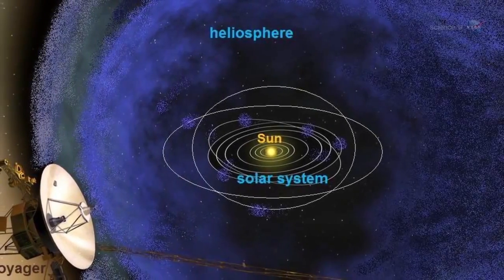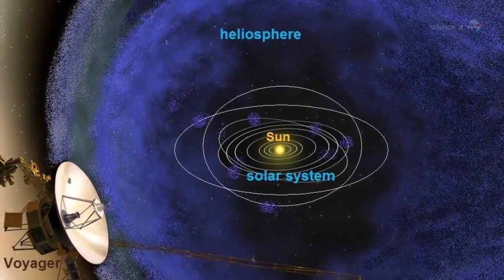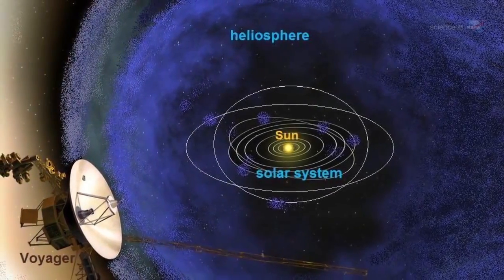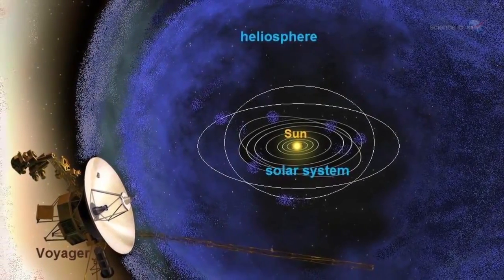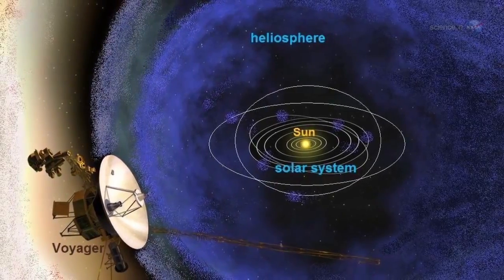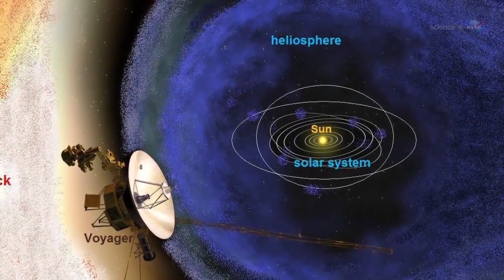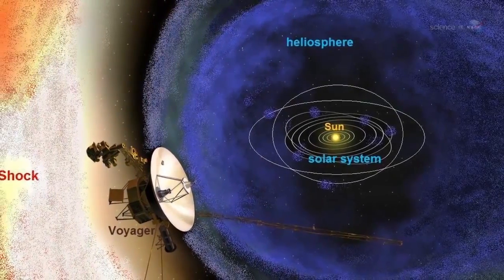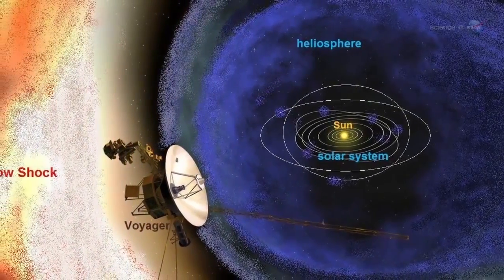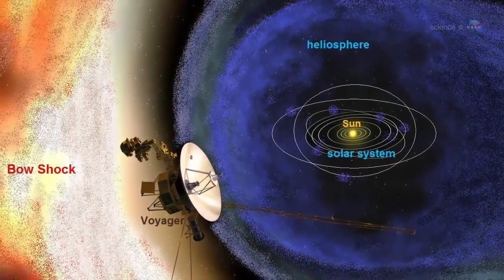A reversal of the Sun's magnetic field is, literally, a big event. The domain of the Sun's magnetic influence, also known as the heliosphere, extends billions of kilometers beyond Pluto. Changes to the field's polarity ripple all the way out to the Voyager probes, on the doorstep of interstellar space.